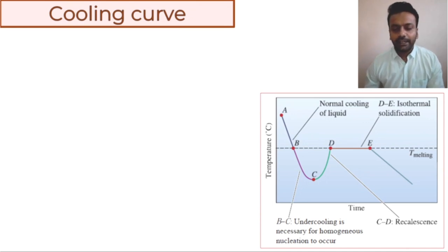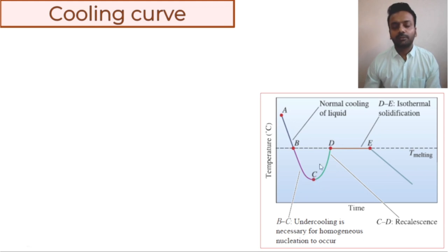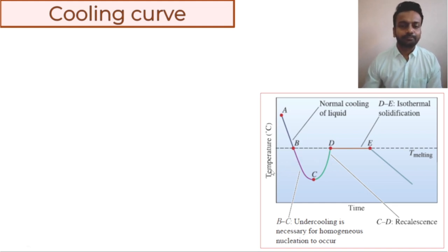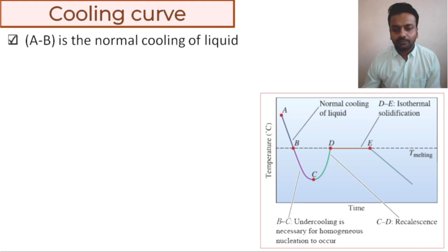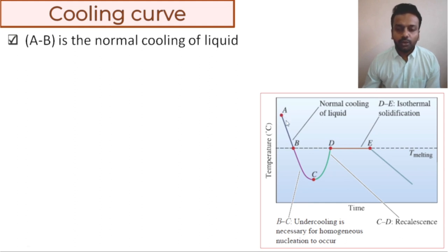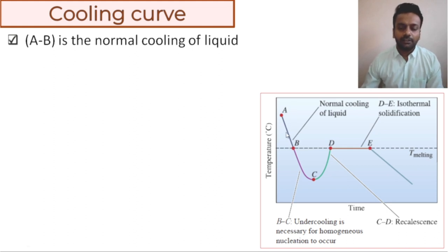Looking at this diagram with points A, B, C, D, and E — this is again a cooling curve. For a pure metal going through undercooling we go from A through C, or it can go from B to D when it is a normal material, alloy, or something which contains impurity. From A to B the metal is completely liquid and we are just normally cooling the liquid — nothing fancy here.